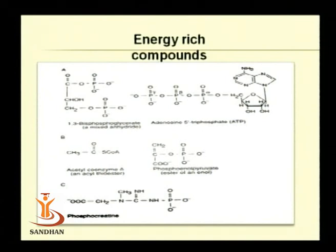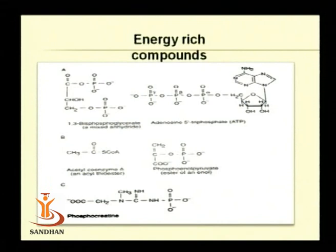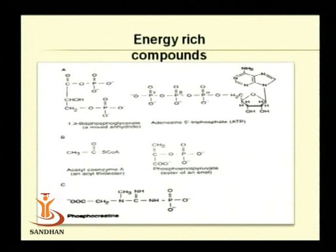You can see from the diagram various kinds of energy-rich compounds: 1,3-bisphosphoglyceric acid, ATP — which is regarded as the universal source of energy for microorganisms — as well as acyl coenzyme derivatives and phosphoenol pyruvate. They all have one or more high-energy bonds in the form of a phosphoanhydride bond.